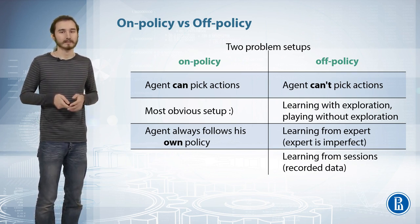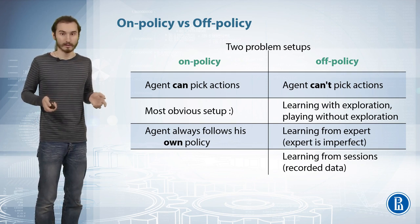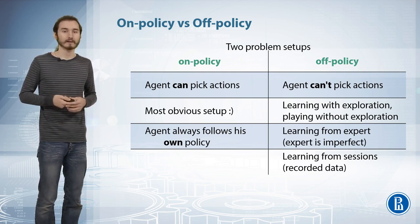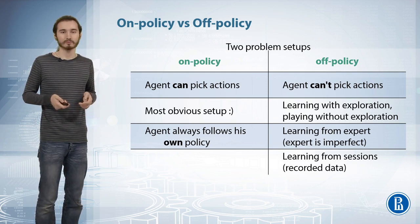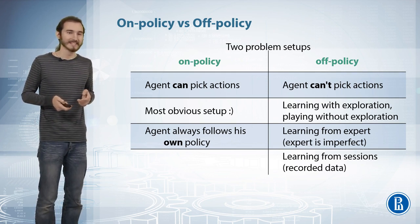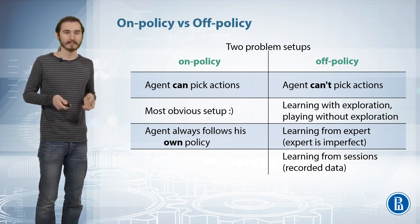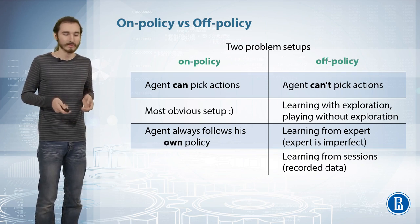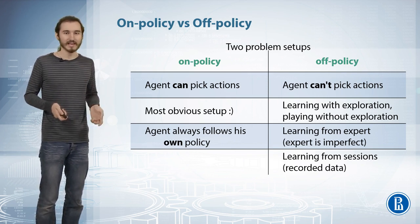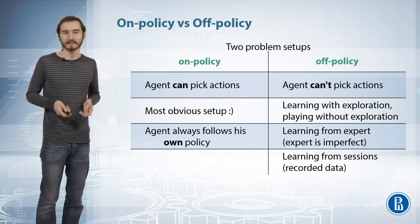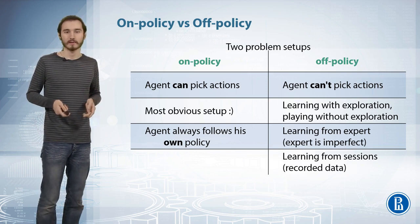Off-policy algorithms, like Q-learning as an example, have a slightly relaxed situation. They don't assume that the sessions you're trained on are the ones that you're going to use when the agent is finally unchained and applied to the actual problem.